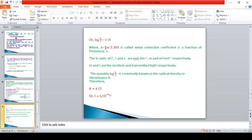Here, epsilon is alpha by 2.303. It is known as molar extinction coefficient and is a function of frequency nu. The SI unit of concentration, length, and epsilon are mole per decimeter cube, meter, and meter square per mole respectively.